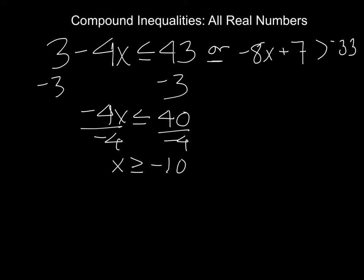On the other side, we want to subtract 7 from both sides, leaving us with -8x > -40. Divide both sides by -8, and we get x is now less than positive 5.